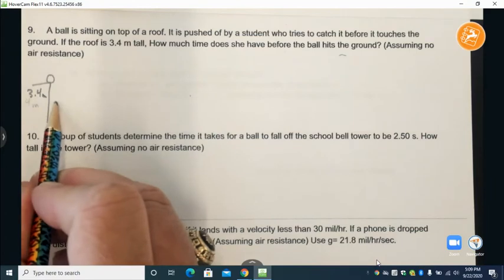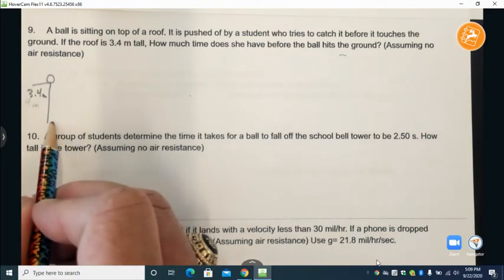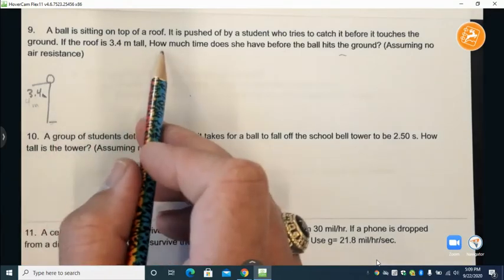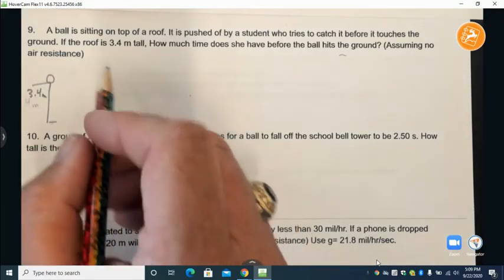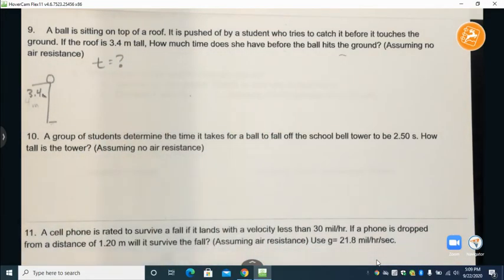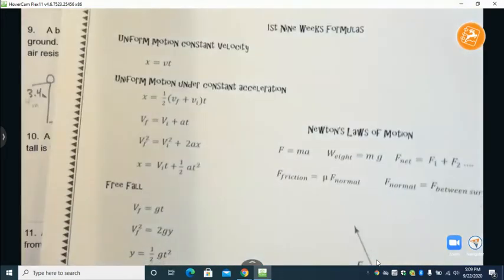We'll use some object to push that off and we want to catch it just before it hits the ground. So we're gonna see how much time do we have. So T is our unknown and we need an equation for free fall.